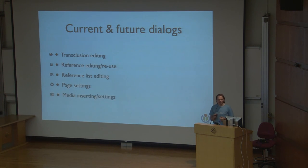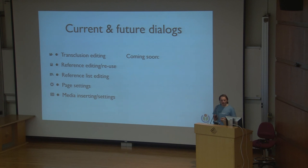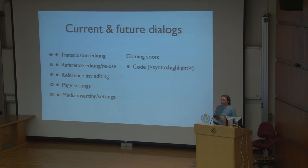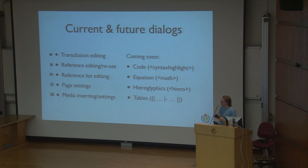Media insertion and settings — we now have searching for images in local and remote wikis. Coming up soon are a syntax highlighter, so you can have an inline editor for code examples with syntax highlighting even inside the editor itself, not just when you save. Also maps, using MapData and Kartographer and things like that. And last but not least, tables — we already have limited support for tables, but this will allow more sophisticated editing of tables.